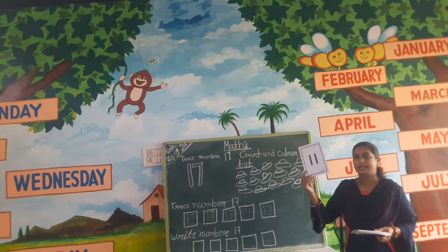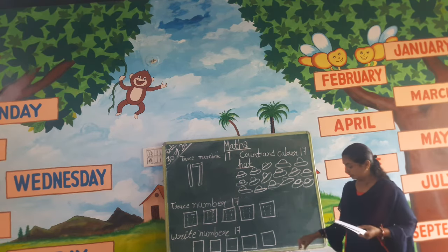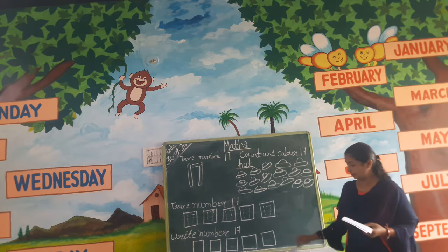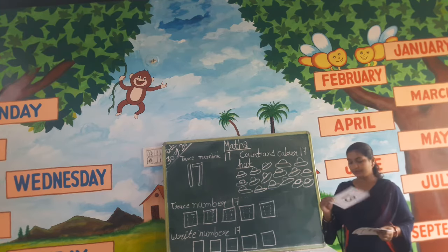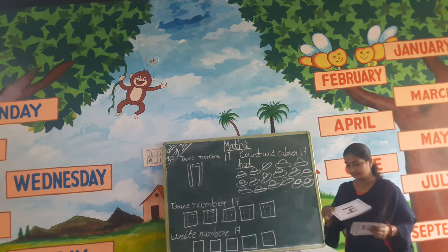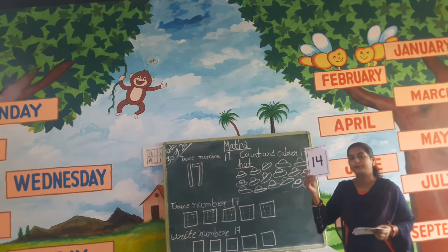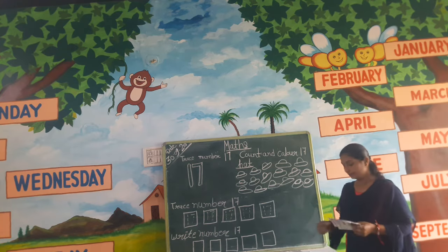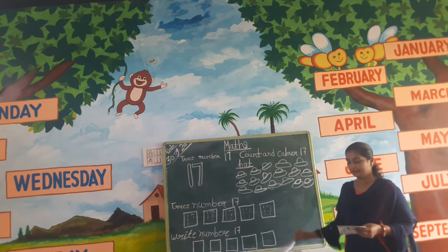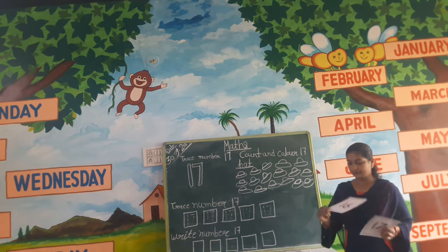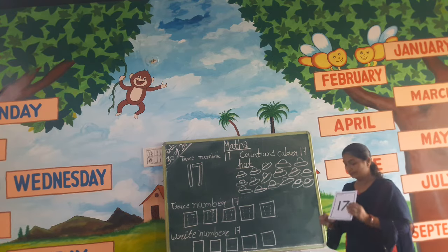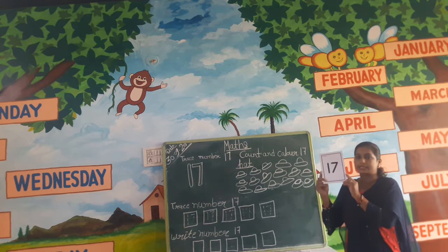Eleven, twelve, thirteen, fourteen, fifteen, sixteen, then seventeen.